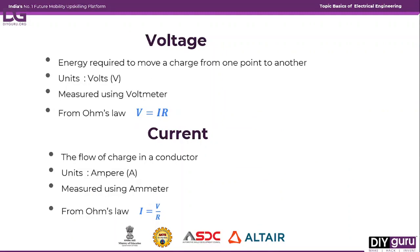Now let's look at what voltage, current, and resistance actually are. Voltage is the energy or force required to move a charge from one point to another. When a potential difference is connected across two terminals, a charge is acquired and must move from one point to another — voltage is responsible for moving that charge. The unit of voltage is volts, and it is measured using a voltmeter. From Ohm's Law, V = IR, so if you know the current and resistance of an element, you can easily calculate the voltage across it.